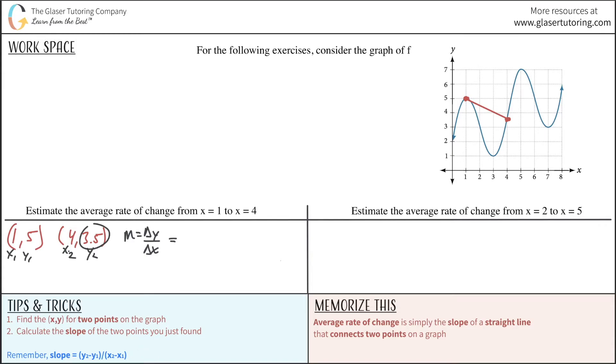So my y2 value is 3.5. My y1 value is 5. My x2 value is 4. And my x1 value is 1. So when I do the math here, I get negative 1.5 all over 3. We can reduce that down to one half. So this is negative one half.